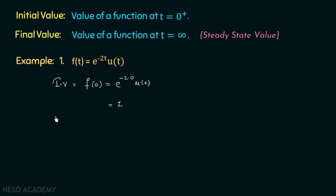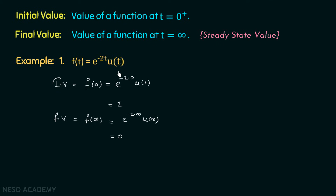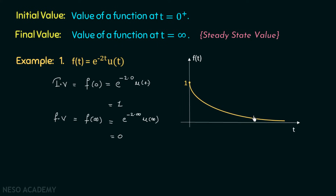Similarly, to find the final value we evaluate f at t equal to infinity: e to the power minus 2 times infinity, times u(infinity). e to the power minus infinity equals 0. If we plot this function, we get an exponentially decaying curve where the initial value at t equal to 0 is 1 and the final value approaches 0 as t tends to infinity.